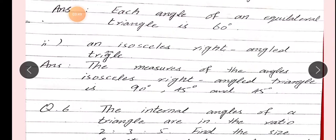Equilateral triangle kaun se triangle hai? Jiski teenon sides bhi same hon aur teenon angles bhi same hon. Iska second part hai: an isosceles right-angled triangle. Isosceles kaun si hai? Jiske two sides jo hain, woh same hon. Aur right-angled kaun si hai? Jiska ek angle jo hai, woh 90 degree ka ho. To iska answer hai: the measures of the angles of an isosceles right-angled triangle are 90, 45, and 45 degrees. 45 aur 45 ki opposite jo sides hain, woh same length ho jaayengi.